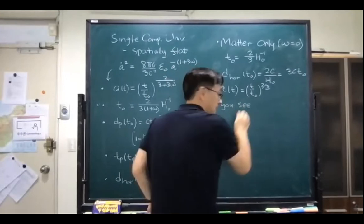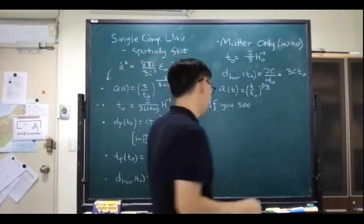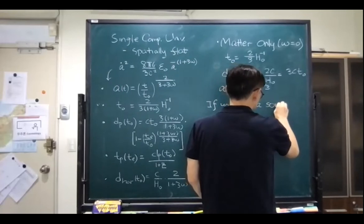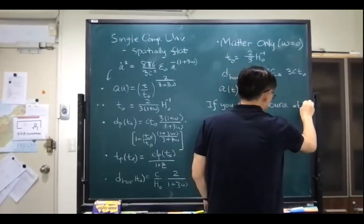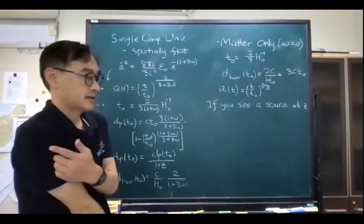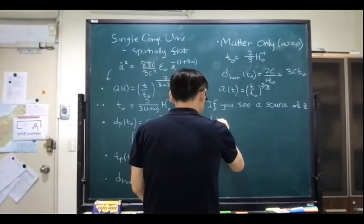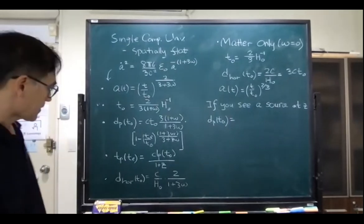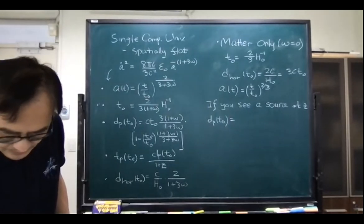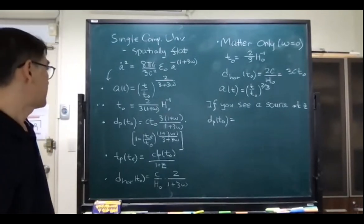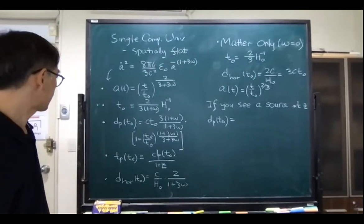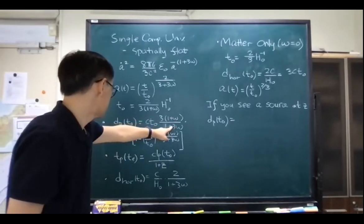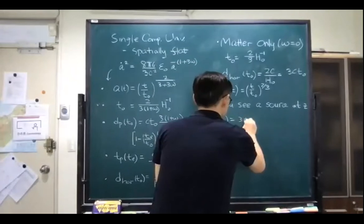Now if you see a galaxy, or any object that emits light — a source at redshift z — then the proper distance. So let's try to use this: I have three c t₀ times one minus (t_e/t₀)^(1/3).